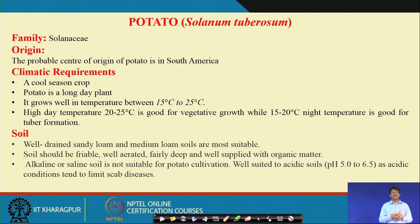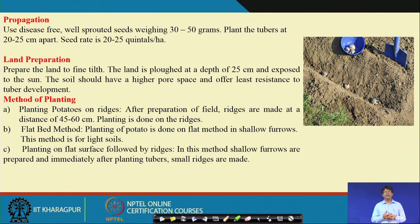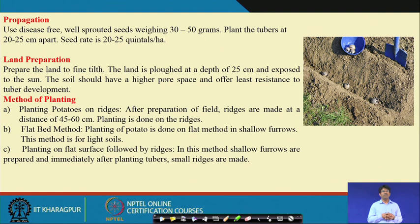For propagation and planting, in organic farming you must use disease-free, well-sprouted seeds with tuber size around 30 to 50 grams each. Plant tubers at a spacing of 20 to 25 cm within the row and around 60 cm between rows. Seed rate is usually 20 to 25 quintals per hectare.